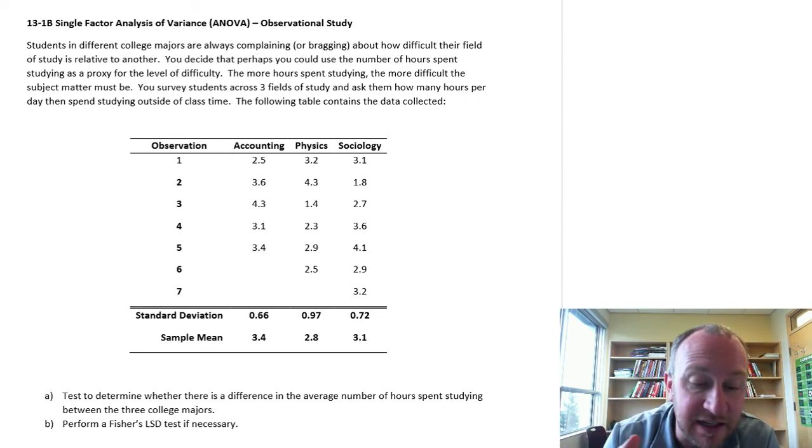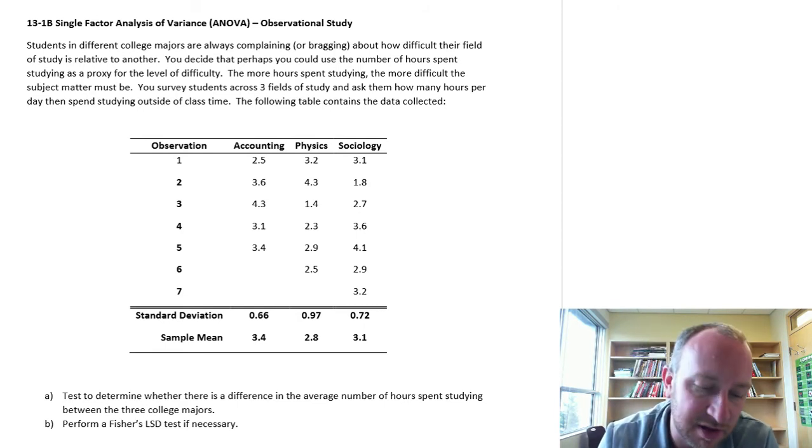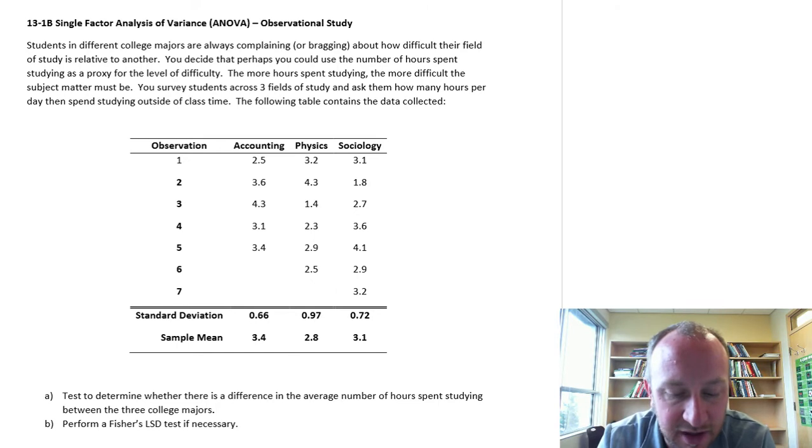So in this one we're looking at students in different college majors who always complain or I think that's secretly bragging how difficult their field of study is relative to another. You decide that perhaps you could use a number of hours spent studying as a proxy for the level of difficulty. The more hours spent studying, the more difficult the subject matter must be. So you survey students across three fields of study and ask them how many hours per week or per day they spend studying outside of class and so here's our data. So what is our factor of investigation? Well here we're studying different college majors, different fields of study. What are our treatments? I have three treatments, accounting, physics, and sociology. Our experimental units, those are the students that we've spoken to, and our response variable, our data here is measured in terms of hours spent studying. So there's the breakdown of our experiment.